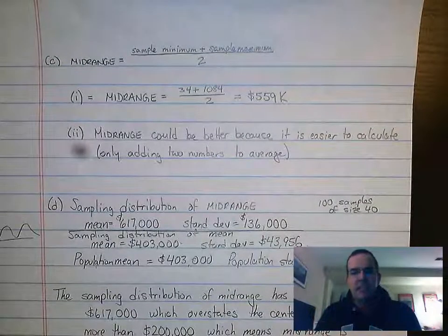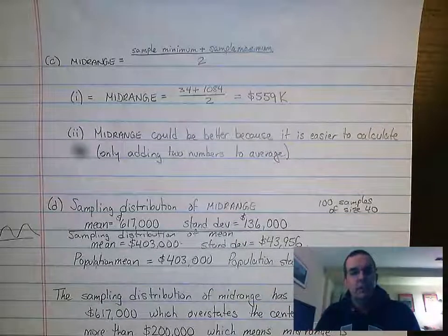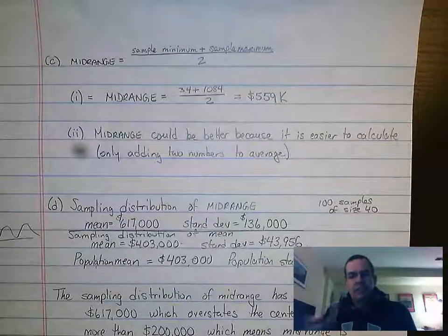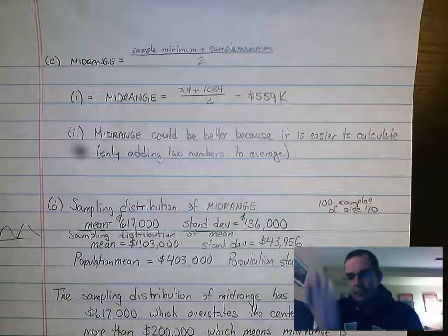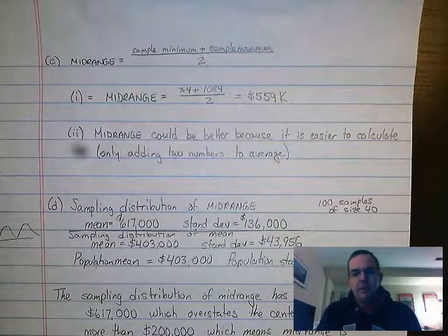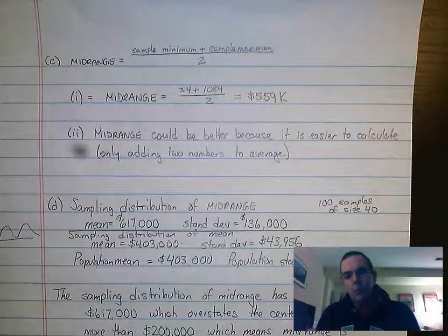Part two of this question says, why would mid-range be an advantage over mean? The one reason that jumped to mind right away is mid-range is easy to calculate. It's big number plus little number divided by two. It's an addition and a division. So we add two numbers, we divide by a number.